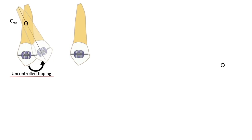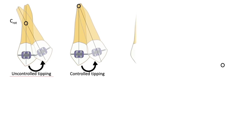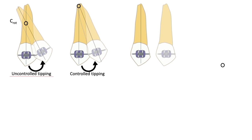In uncontrolled tipping, it is easy to visualize that the crown and the root will move in opposite directions. In controlled tipping, the center of rotation is located at the root apex — the tooth moves similar to a pendulum with its apex fixed at a particular point and the crown moving from one side to the other. Translation, sometimes known as bodily movement, is extremely rare and very difficult to achieve; here both the crown and the root move in equal amounts and the same direction with no rotation.